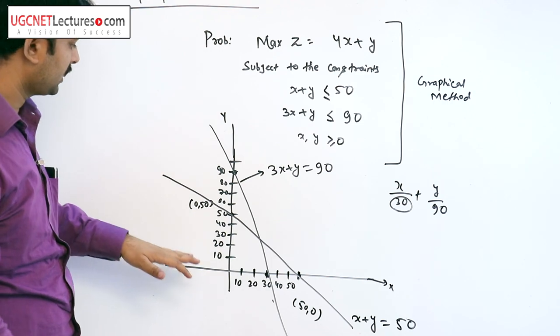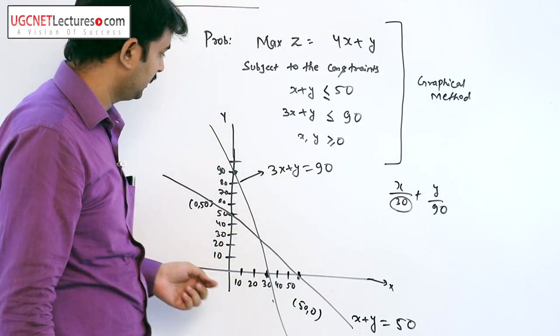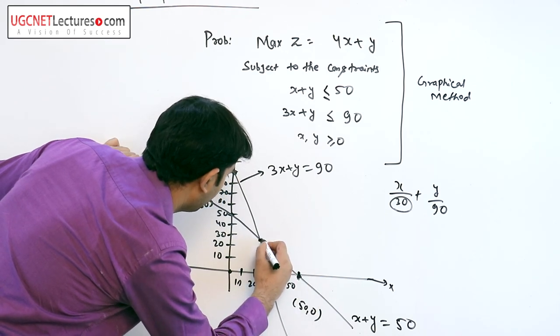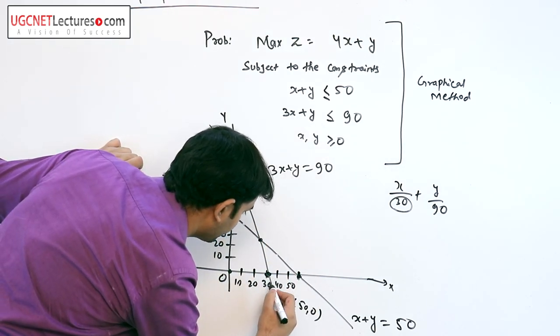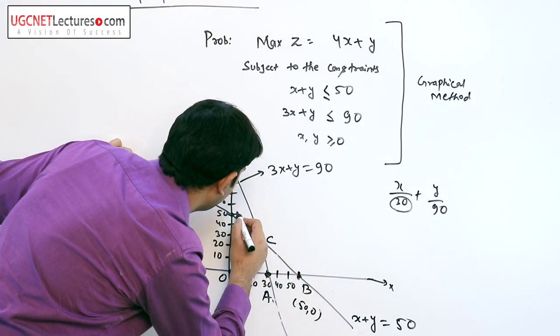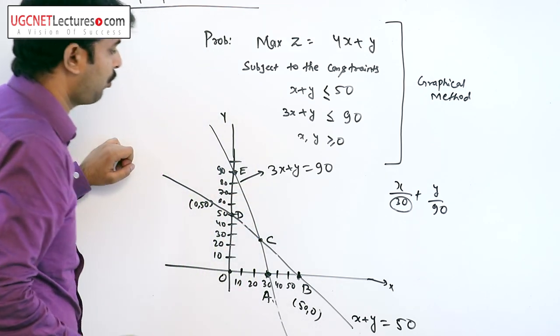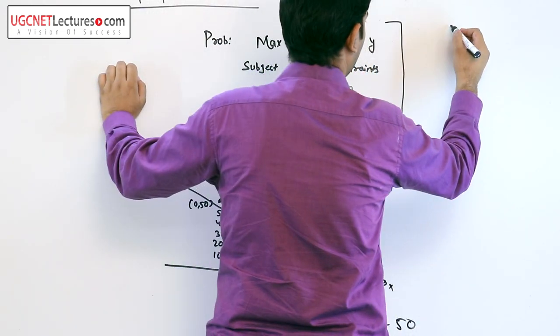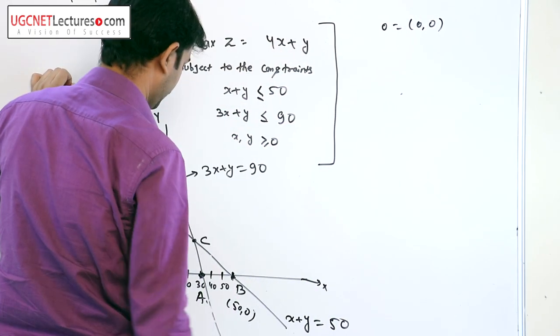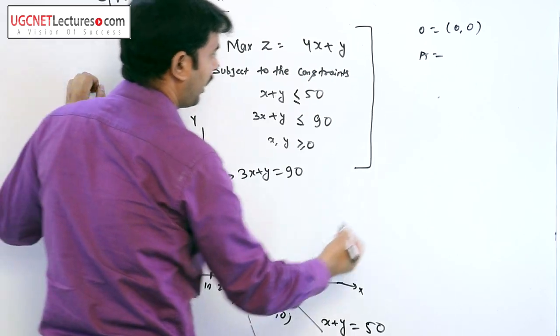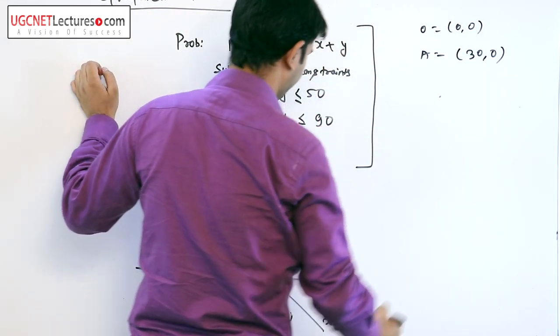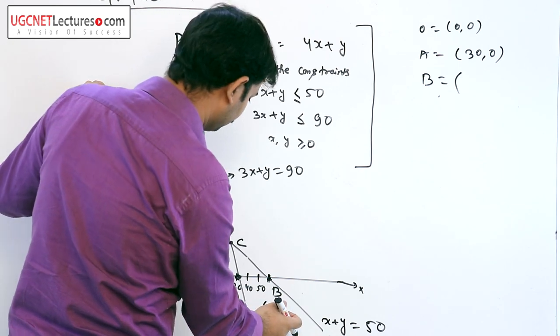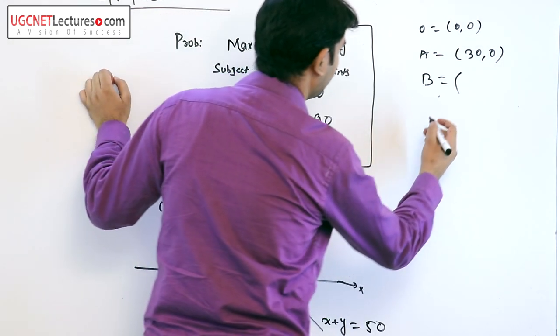What we are doing is plotting these two equations. The coordinates are labeled: O is the origin at (0, 0), A is the point on the x-axis at (30, 0), and B is at (50, 0).